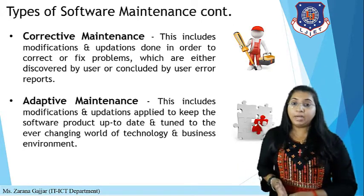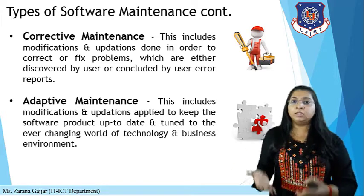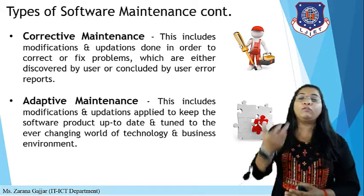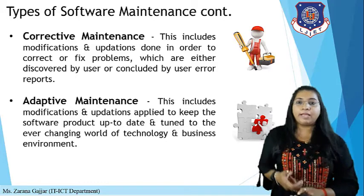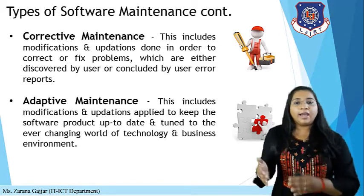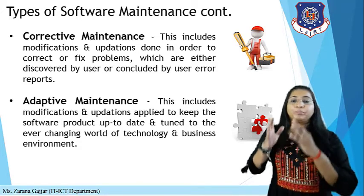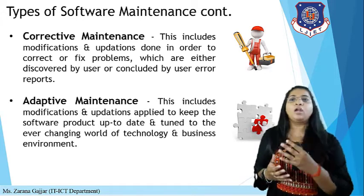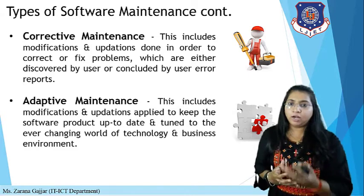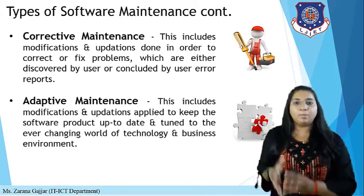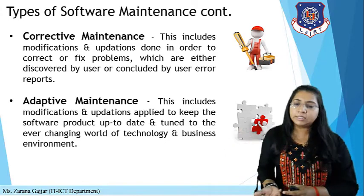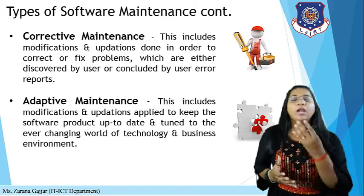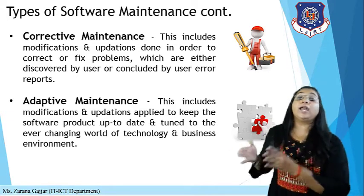There are some types of maintenance based on their characteristics: corrective maintenance, adaptive maintenance, perfective maintenance, and preventive maintenance. First is corrective maintenance, which includes modifications and updates done in order to correct or fix a problem discovered by the user or reported through a user error report. Corrective means you are correcting something — if a user finds an error and reports it, the developer fixes that error. That is known as corrective maintenance.